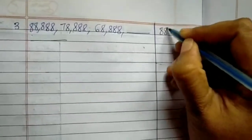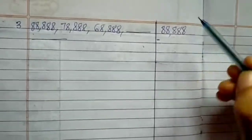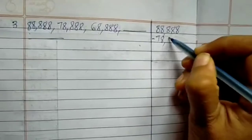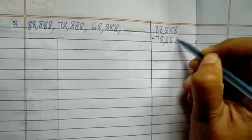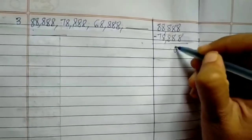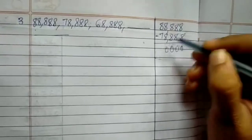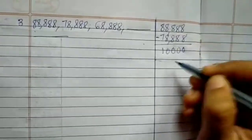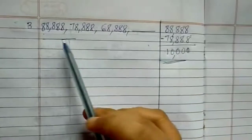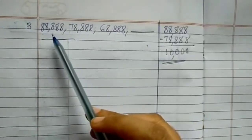So 88,888 minus 78,888 — always take the bigger number first. 8 minus 8 is 0, 8 minus 8 is 0, 8 minus 8 is 0, 8 minus 8 is 0, 8 minus 7 is 1. So the answer is 10,000. Here 10,000 is being subtracted from each number to get the next.